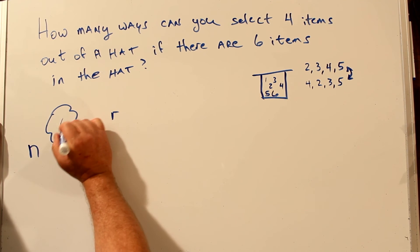So we have to figure out what our universe is. N is our universe. And R are the number of choices. Well, there are six items in the hat. So our universe of items is six. N is six. And we want to select four items. So R is four.